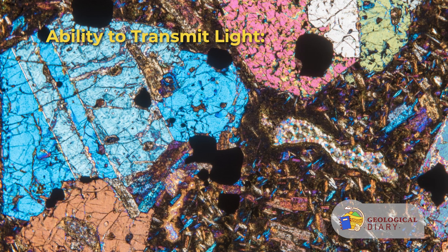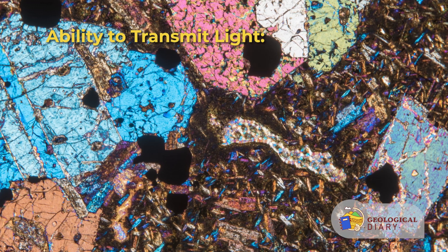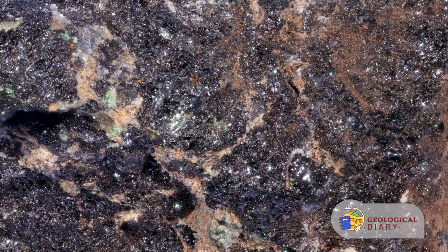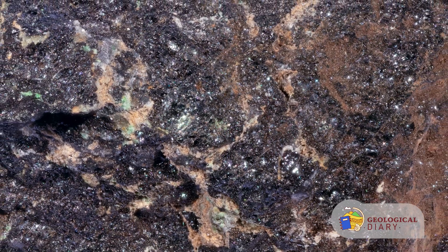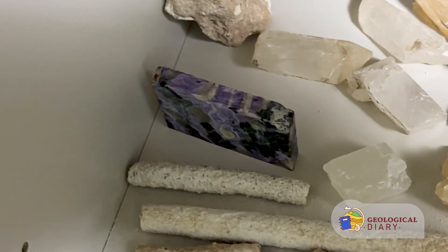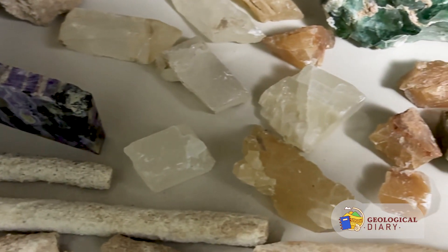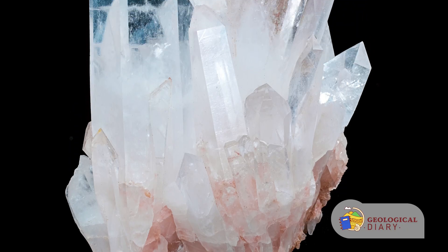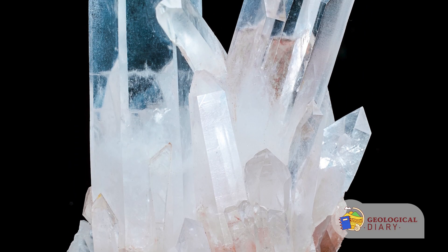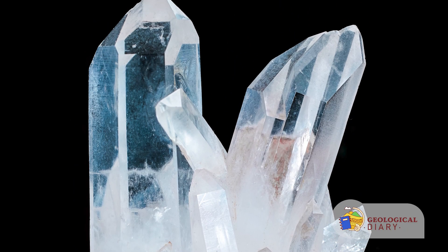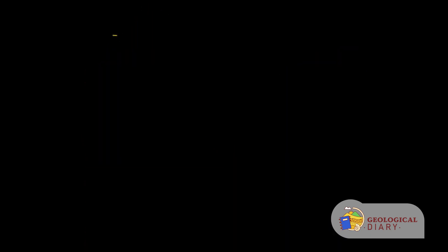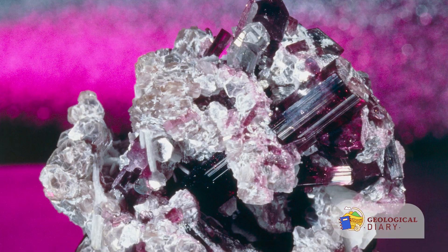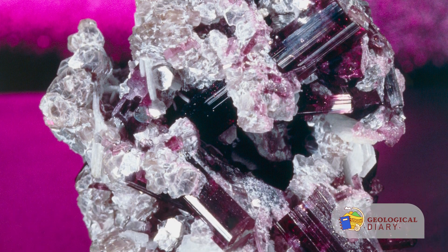Another optical property used in mineral identification is the ability to transmit light. When no light is transmitted, the mineral is described as opaque. When light but not an image is transmitted through a mineral sample, the mineral is said to be translucent. When both light and an image are visible through the sample, the mineral is described as transparent.